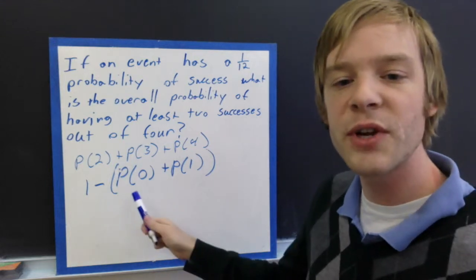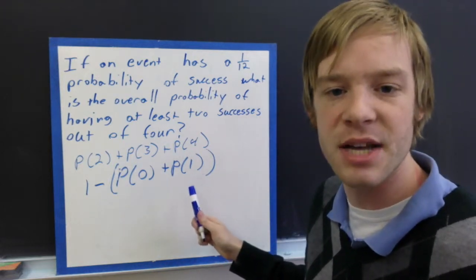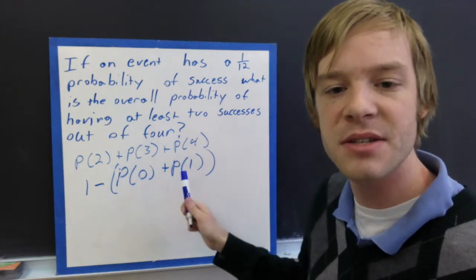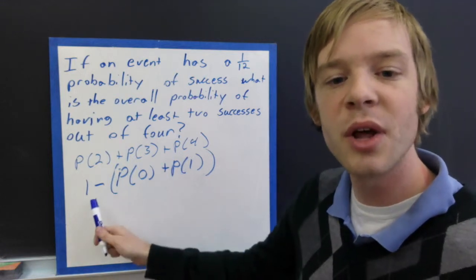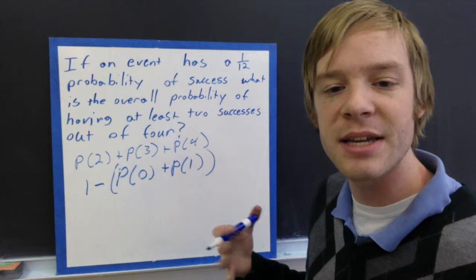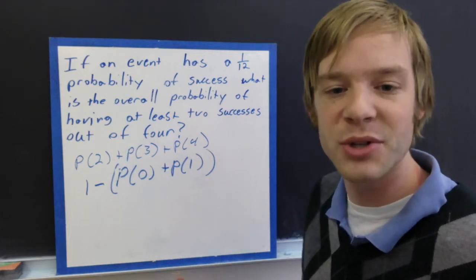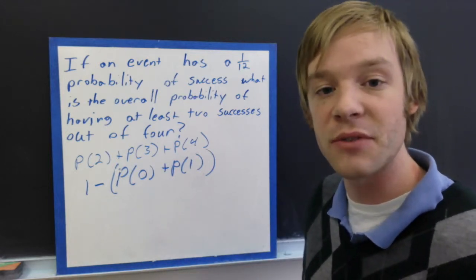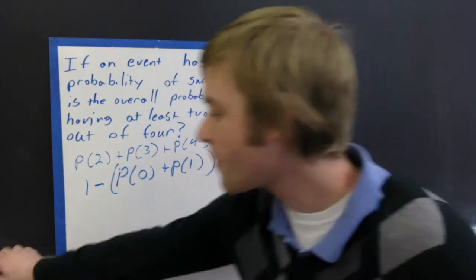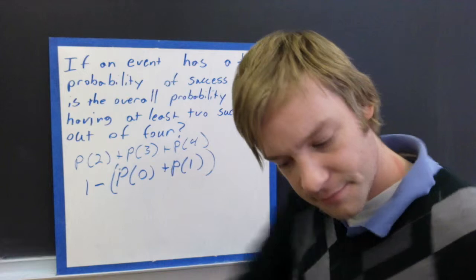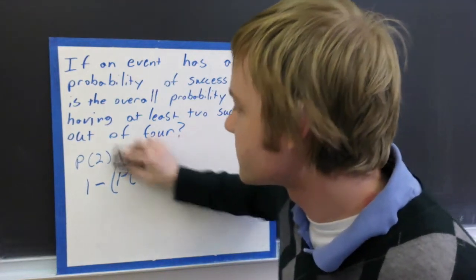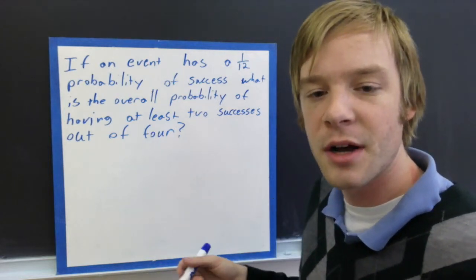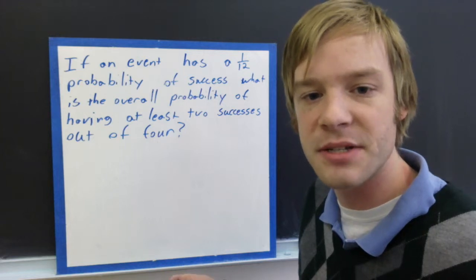So what we're actually going to do is we're going to do 1 minus the probability of 0 plus the probability of 1. So what we're doing here is we're figuring out what's the probability of basically not being successful. What's the probability of us not getting at least 2 successes? So that's the probability of 0 successes and the probability of 1 success. And we're going to do 1 minus that. So we're basically taking the inverse of what it is that we're actually looking for, and that will give us what we're actually looking for with a little bit less work.